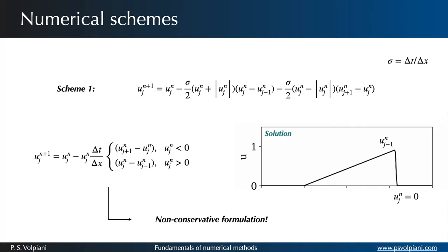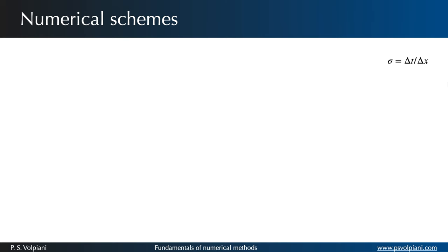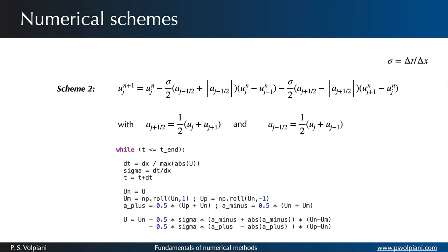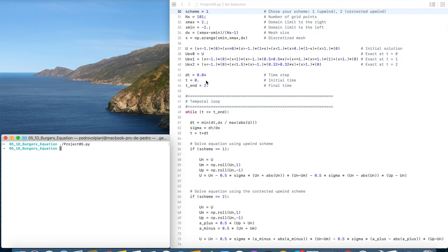One way to fix this issue is to use an average of the advection speed between the surrounding cells. Let's consider now a new upwind scheme that uses a modified advection speed. Let's run now our Python code using the new formulation keeping the same numerical parameters from the previous simulation.